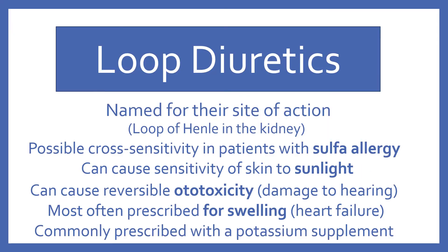Loop diuretics are named for their site of action at the loop of Henle in the kidney. Like the thiazides, these also have a possible cross-sensitivity in patients with sulfa allergy, and they can cause sensitivity of skin to sunlight. Loop diuretics can cause reversible ototoxicity — meaning damage to hearing — but once the loop diuretic is discontinued, this goes away. They are most often prescribed for swelling, especially with heart failure, and are commonly prescribed with a potassium supplement because they cause extreme losses of potassium.